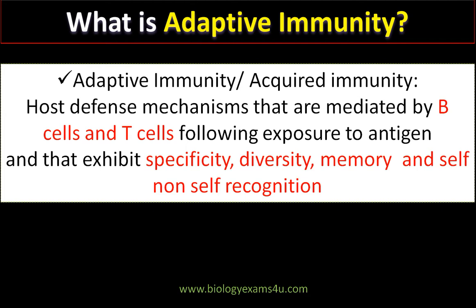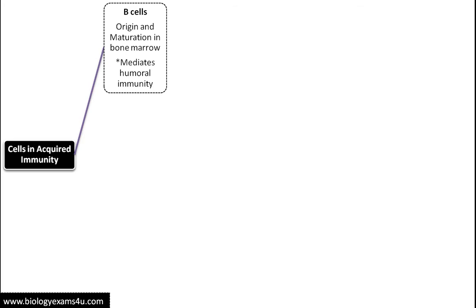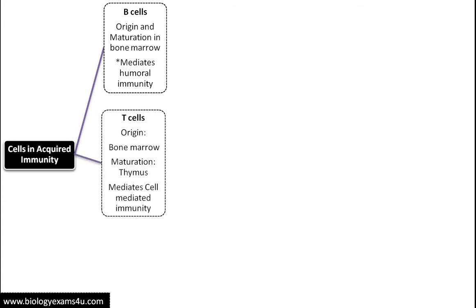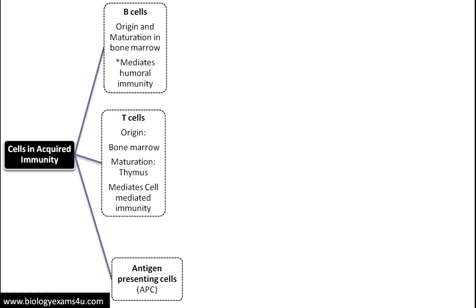Moving into the topic, the cells involved in adaptive immune response: the first class are B cells, called B cells because their origin and maturation occurs in the primary lymphoid organ, the bone marrow. B cells mediate humoral immunity. The second class is T cells — origin in bone marrow, maturation in thymus — which mediates cell-mediated immunity. The third class is antigen presenting cells, which includes B cells, macrophages, and dendritic cells.